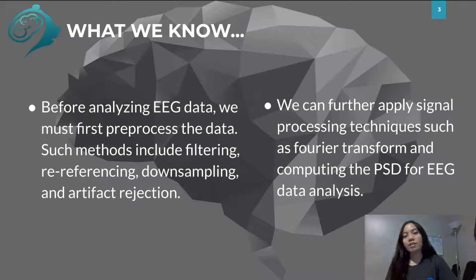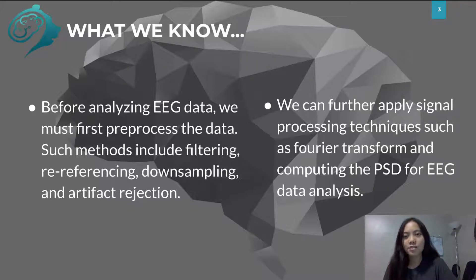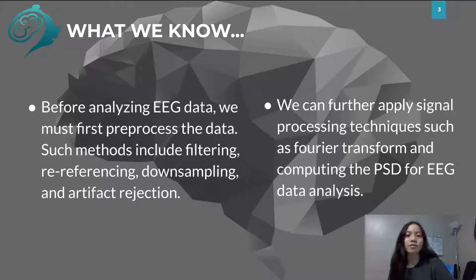Here's what we already know. Before analyzing EEG data, we must first pre-process the data. Such methods include filtering, re-referencing, downsampling, and artifact rejection. We can further apply signal processing techniques such as Fourier transform and computing the power spectral density for EEG data analysis.